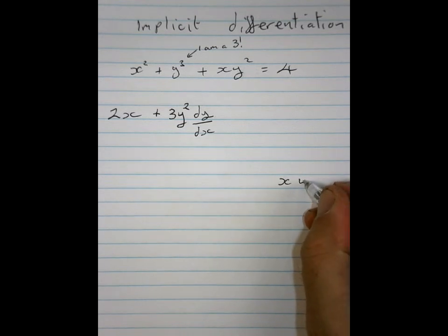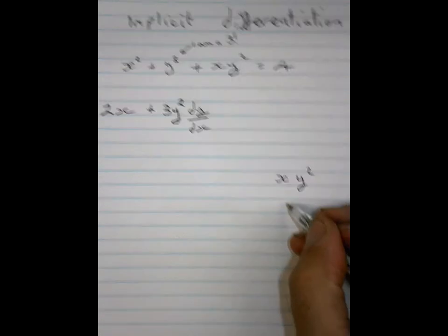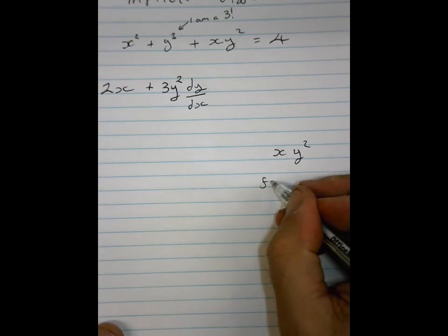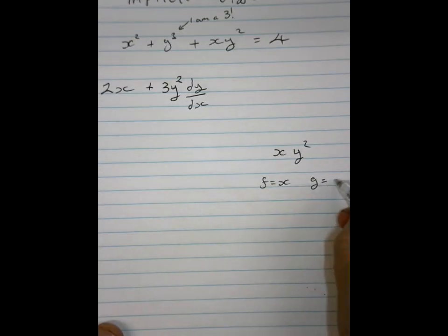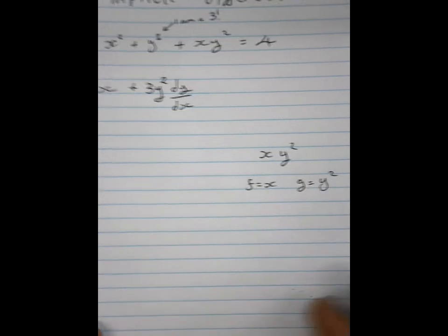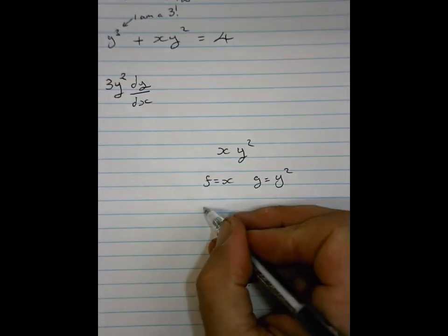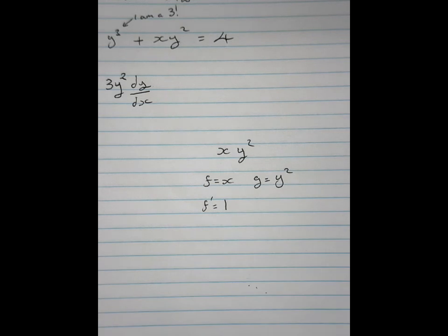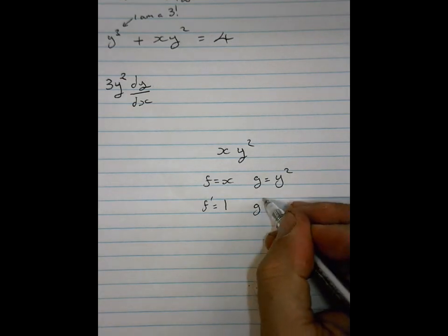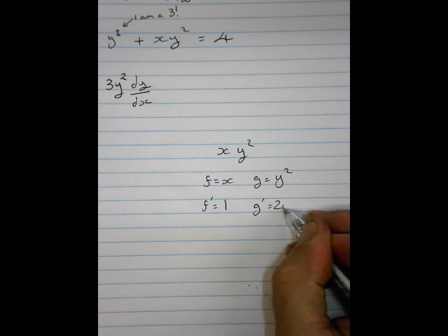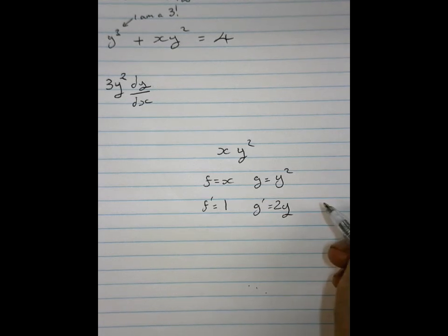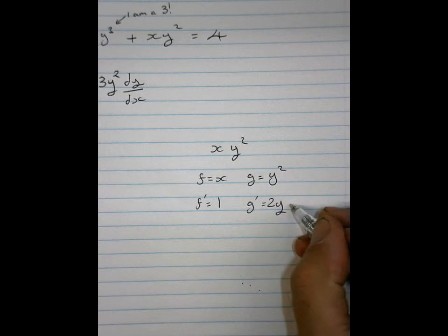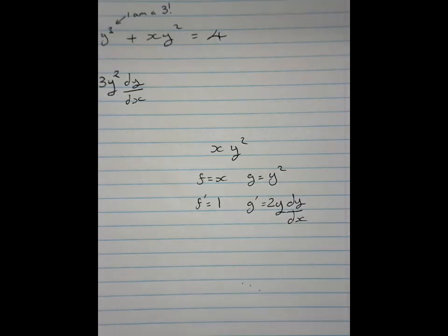So I've got, how do I differentiate x, y squared? And so now I'm going to say f is x, g is y squared. So therefore f dashed is 1 and g dashed is 2y. No, it's 2y, dy by dx. You must remember that.